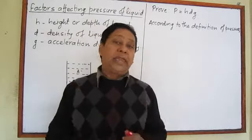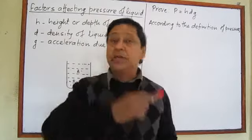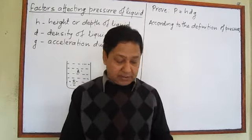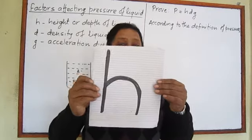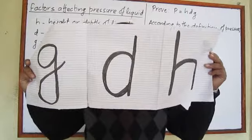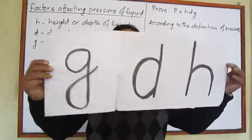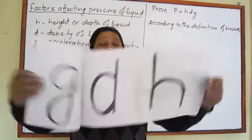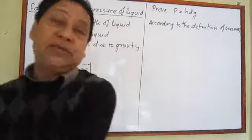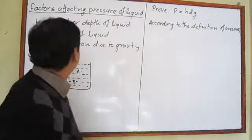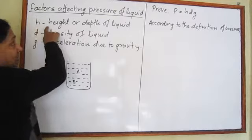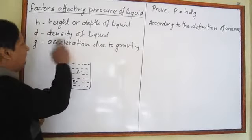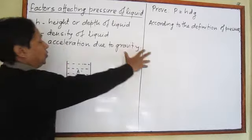Let's talk about liquid pressure. Pressure of liquid depends upon three factors: H, D, and G. H is height or depth of the liquid, D means density of the liquid, and G means acceleration due to gravity.